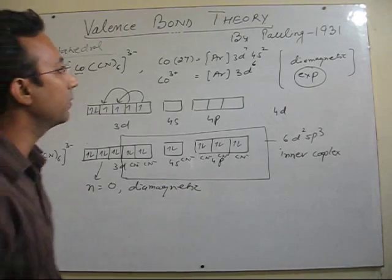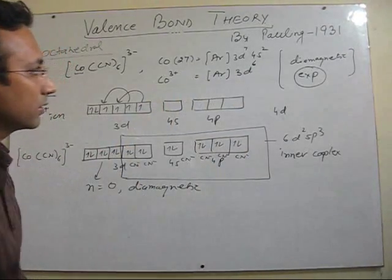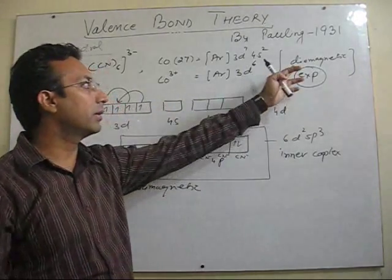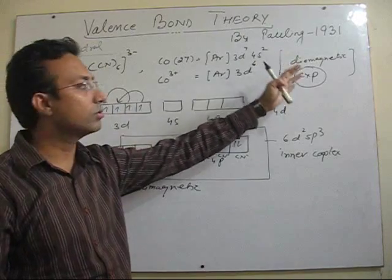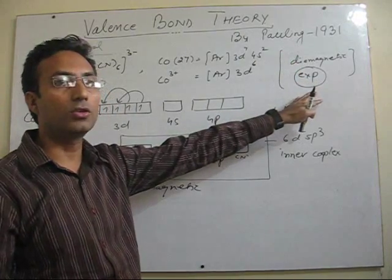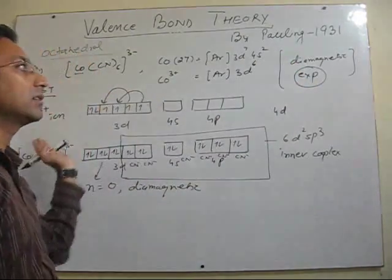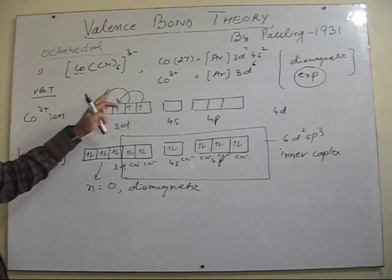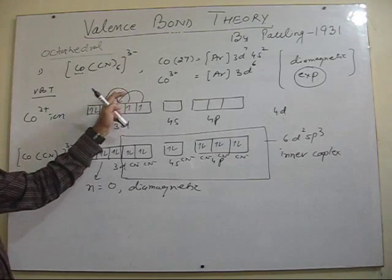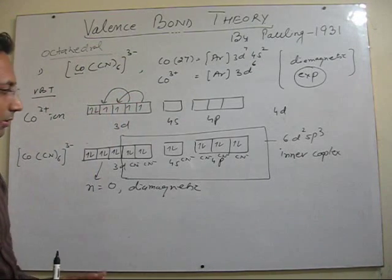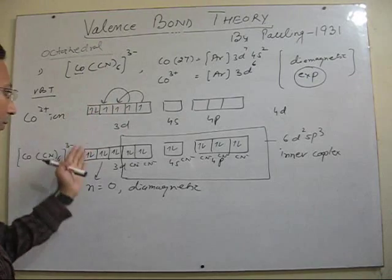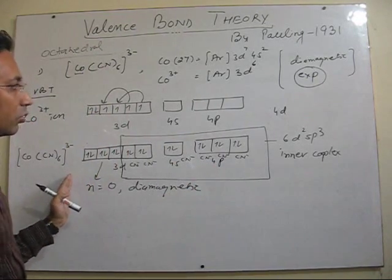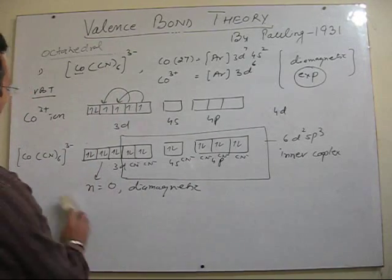So this is how we can explain. Once we know the magnetic behavior we can easily explain this using VBT. So we say that this is a limitation of VBT that its magnetic behavior should be known. But you see if the magnetic behavior is known then VBT very well explains that magnetic behavior. But the thing later on we will see that it could not answer the question that why these electrons are getting paired up here. So just by pairing it is explaining the magnetic behavior here. But it could not explain the cause of pairing.